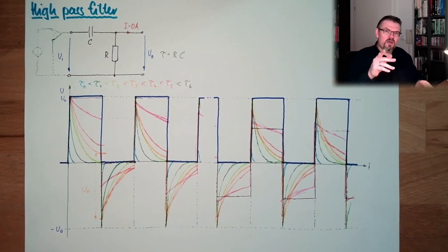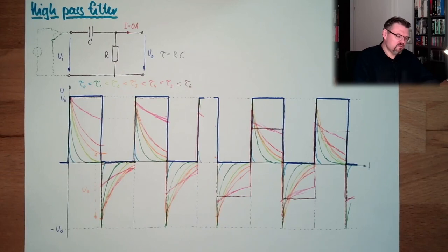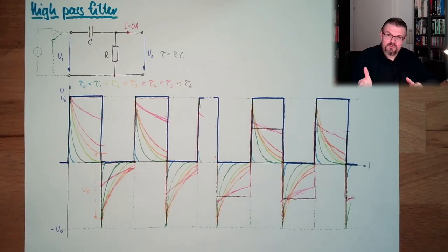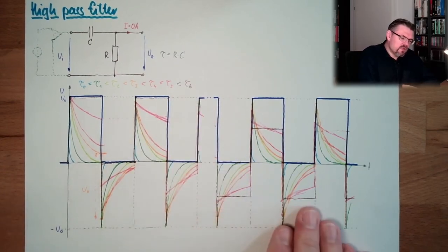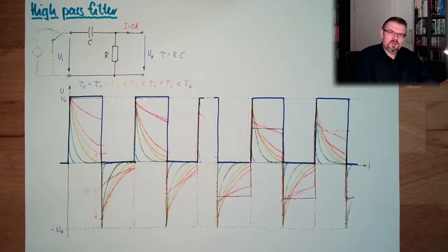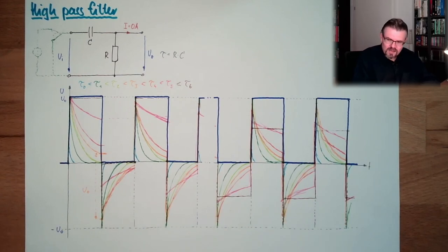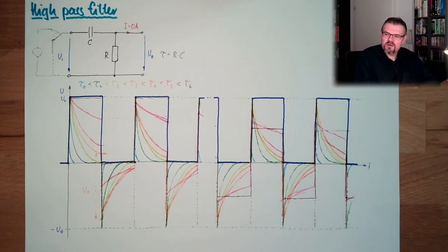The average value is completely gone — low frequencies are filtered out. The average value is a very low frequency, in fact frequency zero — it's gone. High frequencies, relatively high compared to the time constant, are passing through. And there is again a cutoff frequency: this time we are cutting off the lower parts, while the higher parts will stay.